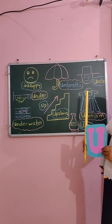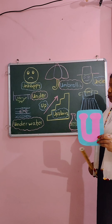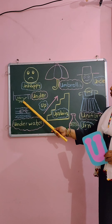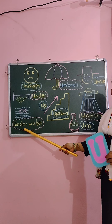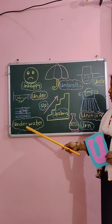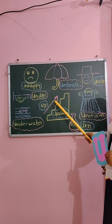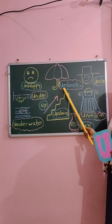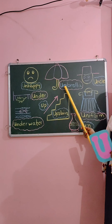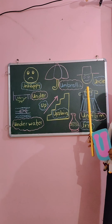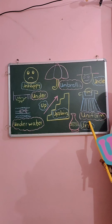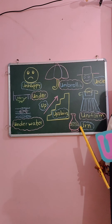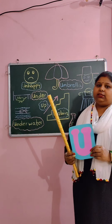Now let's revise again. Letter U. U for unhappy. U for under. U for underwater. U for up. U for upstairs. U for umbrella. U for uncle. U for uniform. U for urn.